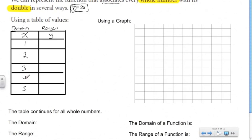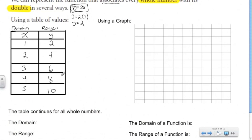For the numbers 1 to 5, we need to figure out what the range is. When x is 1, y is going to be 2 — because 2 times 1 is 2. The double of 2 is 4, the double of 3 is 6, the double of 4 is 8, and the double of 5 is 10. So here's our table of values for the domain 1 to 5. The table continues for all whole numbers — this is just a snapshot of what this function represents.